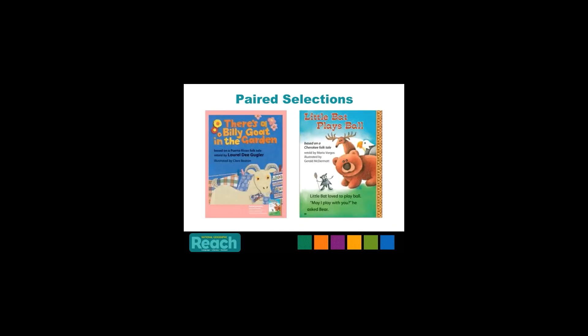At the kindergarten level, the paired selections are included in the big books. Examples from one unit include a Puerto Rican folktale, There's a Billy Goat in the Garden, and the Cherokee folktale, Little Bat Plays Ball.